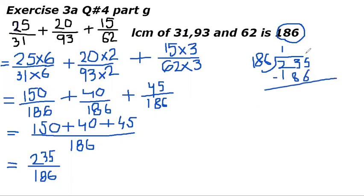186 one time equals 186. Subtract it. 5 is less than 6 so we need to borrow one from this 3. 15 minus 6 equals 9. Now 12 minus 8 gives us 4. It means that 235 upon 186 equals 1 whole number 49 upon 186.